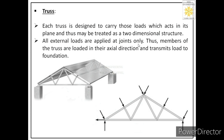All external loads are applied at joints only. Thus members of the truss are loaded in their axial direction and transmit load to the foundation. When we load a particular truss, all loads act at the joints of the truss only. Joints are the ends where two or more members of the truss are connected. Whenever we load a truss, we always load at its joints, and members are under axial load — forces act along the members.